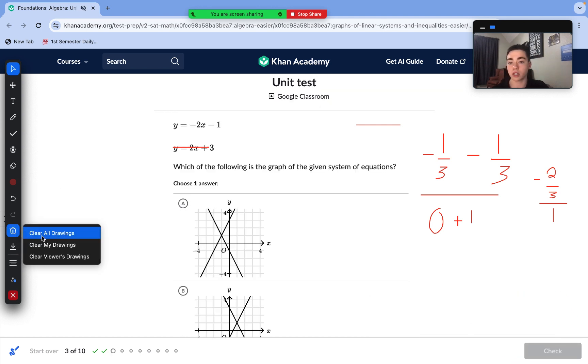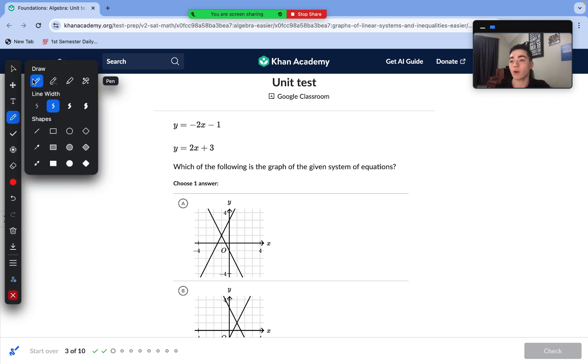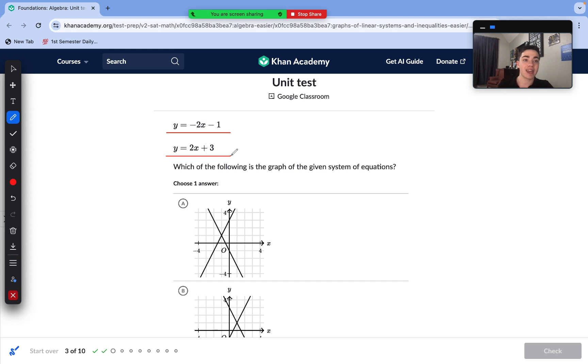Moving to our next question here, which of the following is the graph of the systems of equations? We need to graph each of these lines individually, see where they intersect to find that solution, and then see which of these graphs correctly models that. With our first equation, we have our y-intercept at negative 1, and we are sloping downwards. So that should match this line right here, our y-intercept is negative 1, and then our slope is down 2 across 1. So this line does match our first equation. Let's check the second line. Our y-intercept needs to be at positive 3, and our rise over run should be up 2 across 1, and that does indeed match this other line. So answer choice A is correct, it matches our systems of equations, and our solution is indeed at negative 1 comma 1.